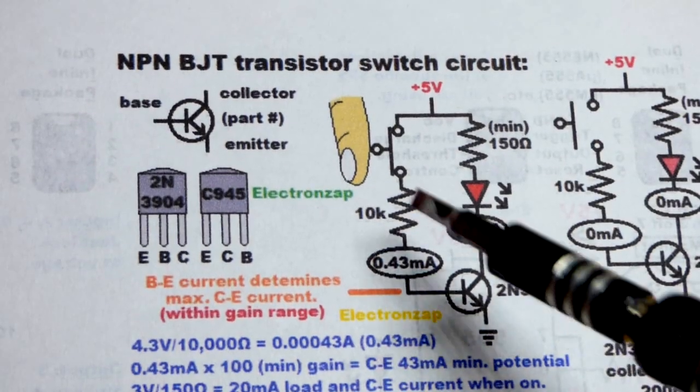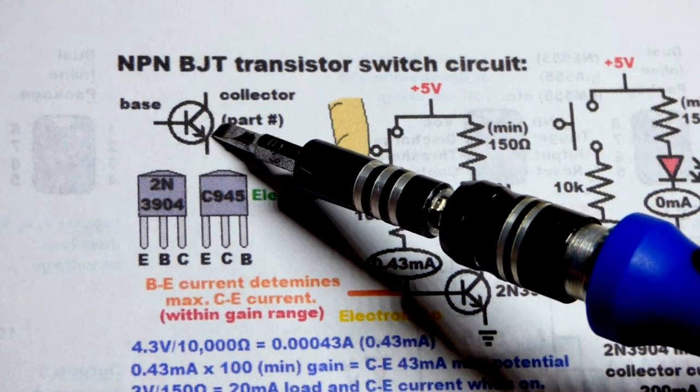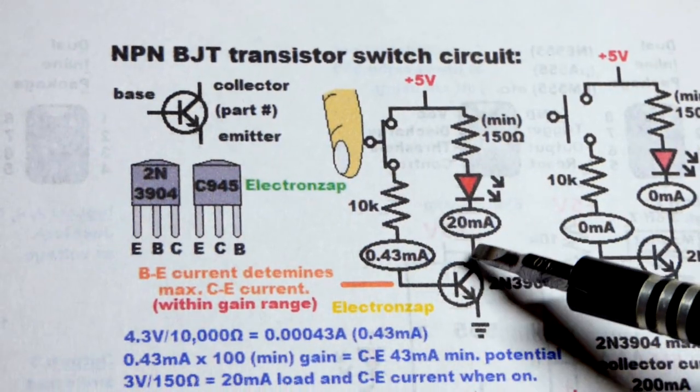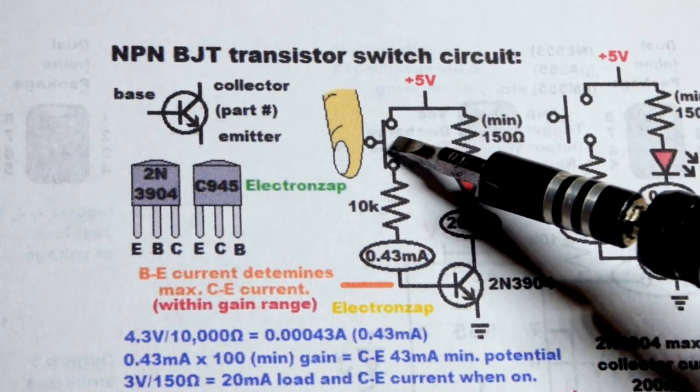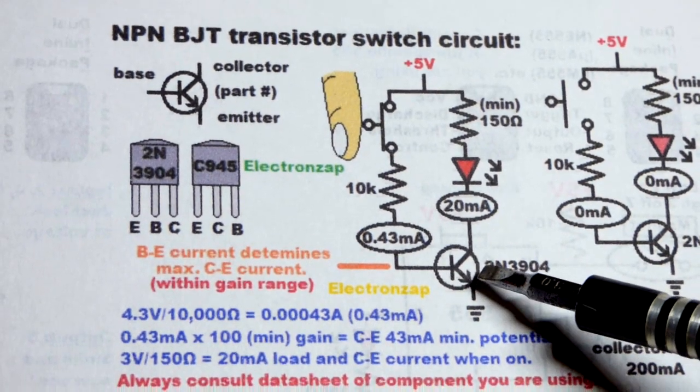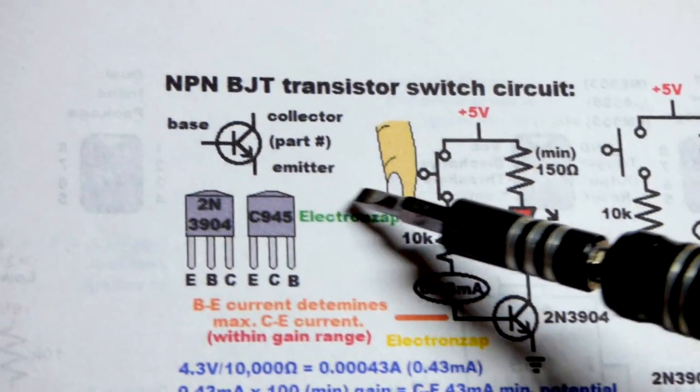So now for this video of my learning electronics series, we're going to look at the NPN bipolar junction transistor wired as a switch. Of course you can turn loads on and off with a mechanical switch.